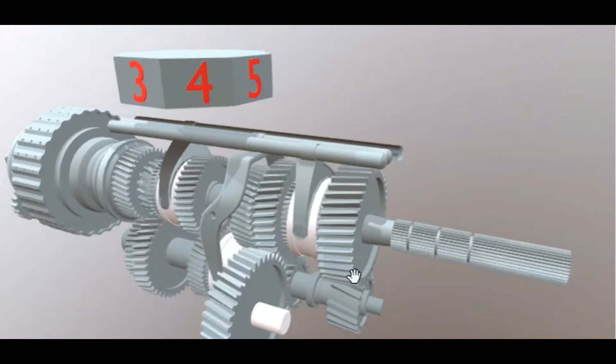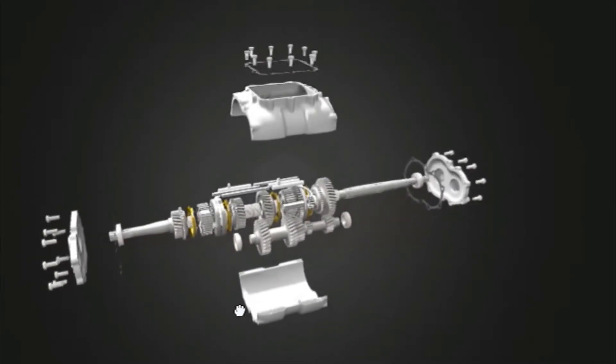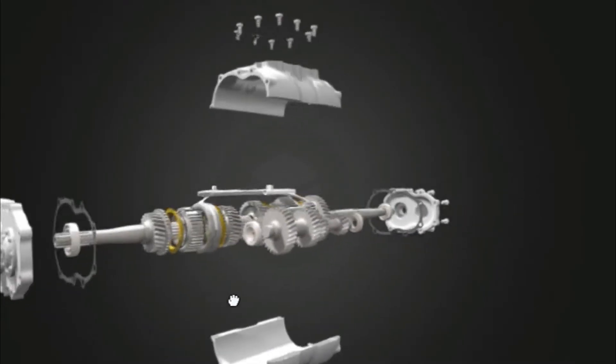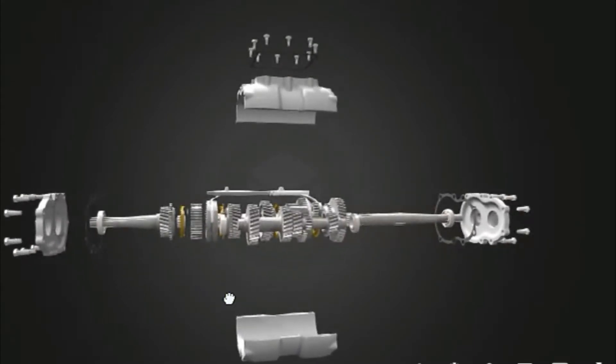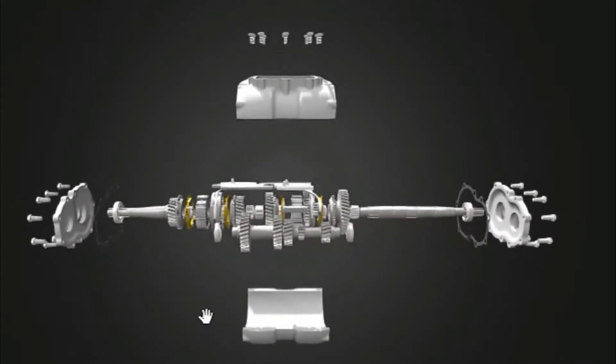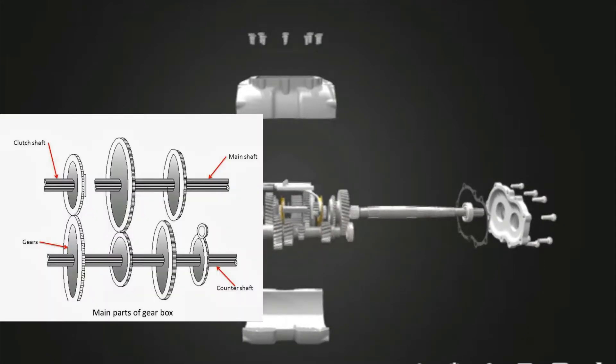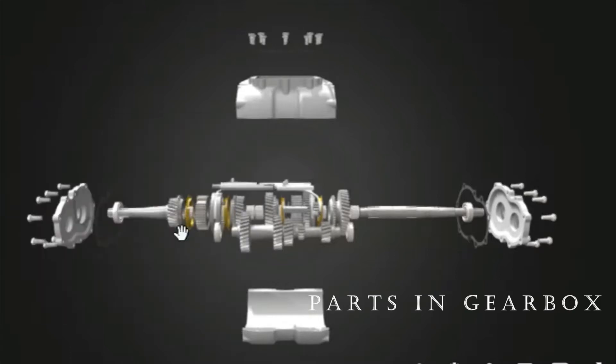In any device, two or more components work together and fulfill the required function. In a transmission box, four components are required to fulfill its function: counter shaft, main shaft, gears, and bearings. Let's check out each one by one.